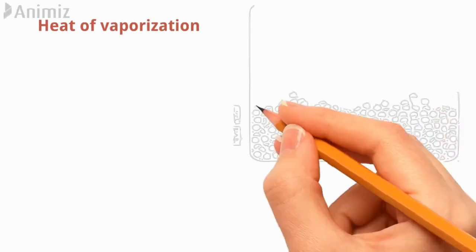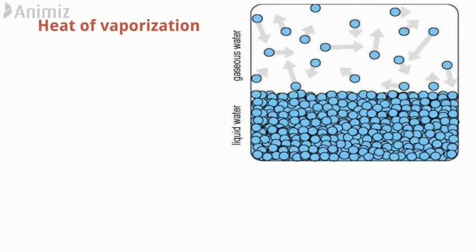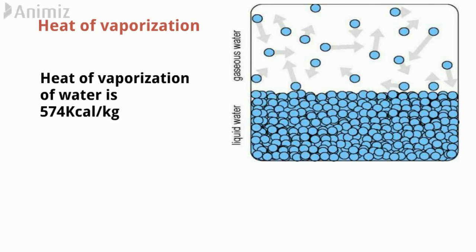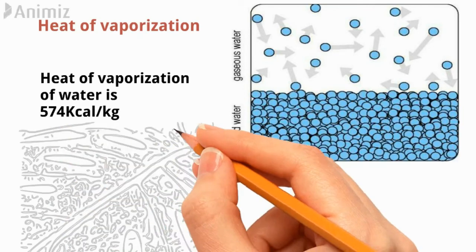Next is the heat of vaporization. Water absorbs much heat as it changes from liquid to gas. Heat of vaporization is expressed as calories absorbed per gram vaporized. The specific heat of vaporization of water is 574 kcal per kilogram, which plays an important role in the regulation of heat produced by oxidation. It also provides a cooling effect to plants when water is transpired.